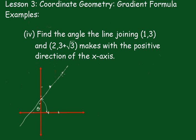Okay so clearly we need the gradient. So m equals y₂ minus y₁ over x₂ minus x₁, which equals this one here 3 plus √3 minus 3 all over 2 take away 1.